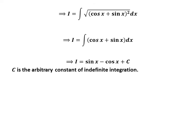So, the integration of square root of 1 plus sine of 2x is equal to sine of x minus cosine of x, and then we add capital C as the arbitrary constant of indefinite integration. Never forget to add this constant.